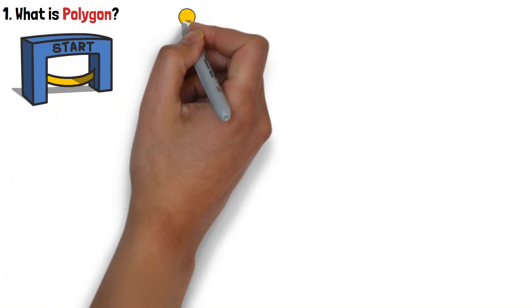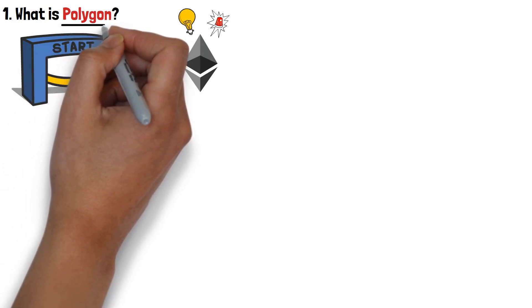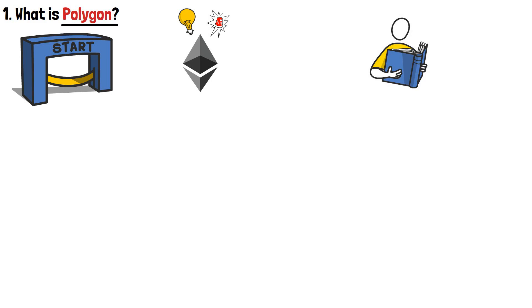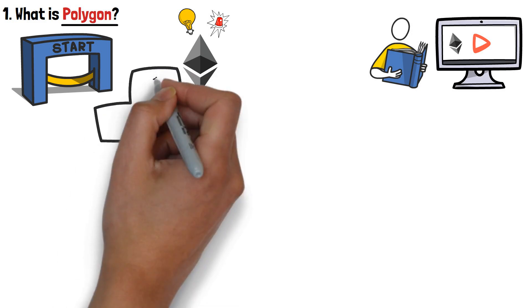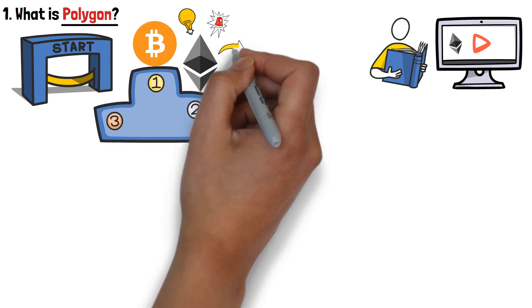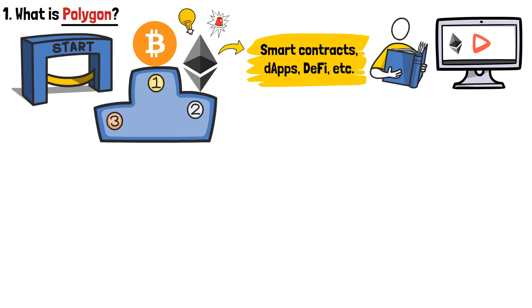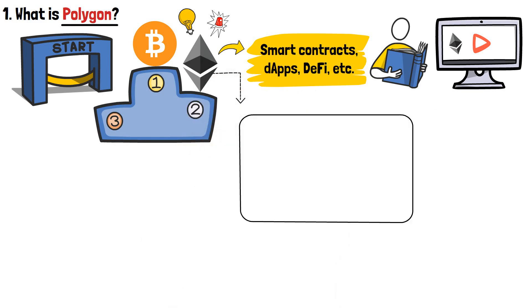To start off, before we can get into the topic of what is Polygon, you first need to understand Ethereum and all of the main issues associated with this blockchain. Since this isn't an Ethereum video, I'll be quick! If you'd like to learn more about this huge blockchain project, check out my channel. Ethereum is the second most popular crypto network, right after Bitcoin. It's super popular for a variety of reasons — smart contracts, dApps, it being the center hub of DeFi, and so on. Having said that, this does not mean that ETH is issue-free. In fact, there are quite a few big issues associated with this blockchain.